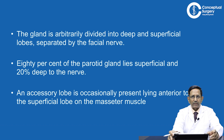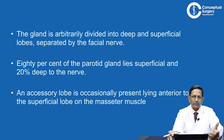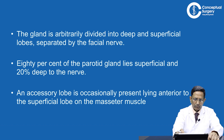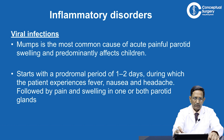The superficial lobe constitutes 80 percent of the parotid gland and the deep lobe is 20 percent. Sometimes there is an accessory lobe which lies above the masseter muscle.